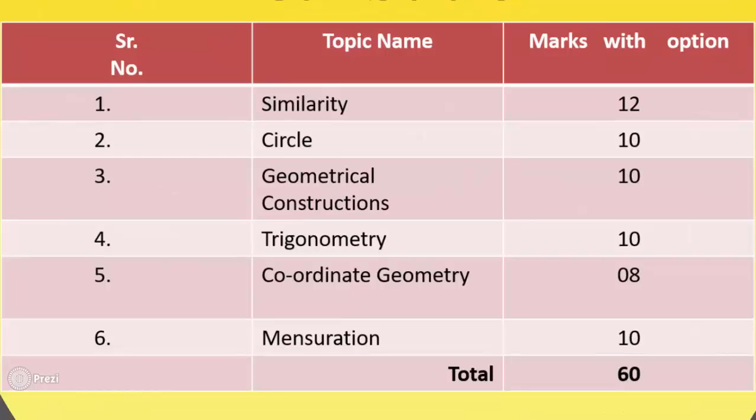The fourth topic is trigonometry, with marks with option being 10. The fifth topic is coordinate geometry, with marks with option being 8. The sixth topic is mensuration, with marks with option being 10. So, total marks are 60.